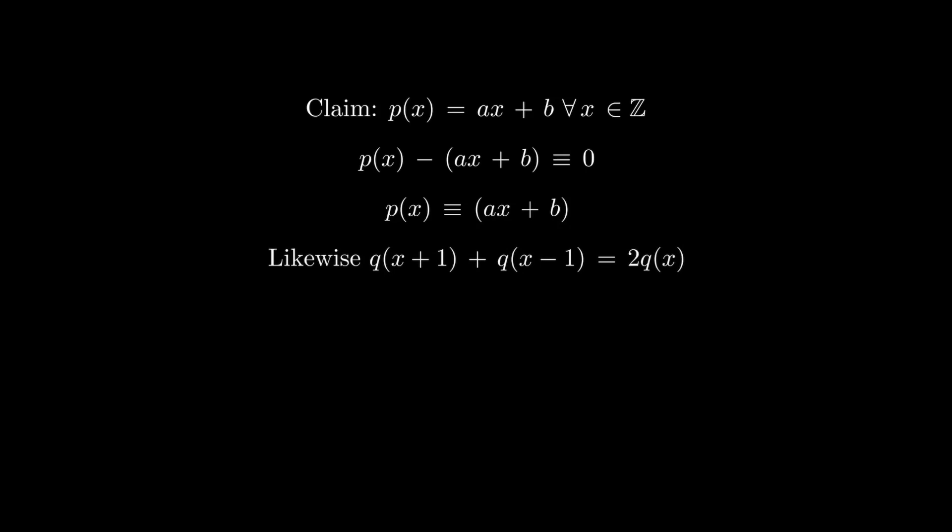Using a similar argument, we can also say that q(x+1) + q(x-1) equals 2q(x), and hence q(x) equals cx + d, where c and d are constants. That means p and q are polynomials of degree at most 1.